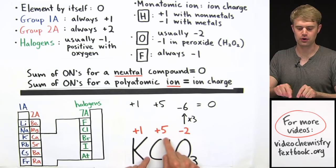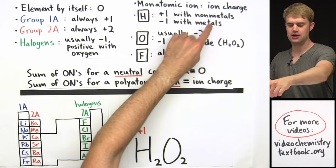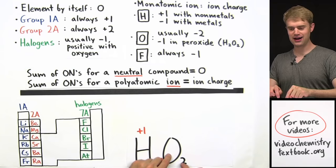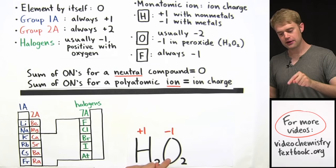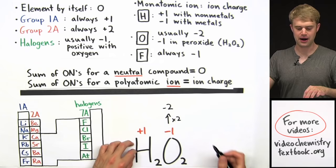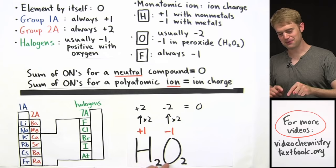H2O2. Hydrogen has an oxidation number of plus 1 with nonmetals, and oxygen is a nonmetal. However, oxygen is usually minus 2 but minus 1 in peroxide — and this is hydrogen peroxide, so oxygen's oxidation number is the rare minus 1 here. With 2 oxygens each at minus 1, we get a total of minus 2. With 2 hydrogens each at plus 1, we get plus 2. Plus 2 minus 2 equals 0. Remember: oxygen is minus 1, not minus 2, when it's in peroxide.